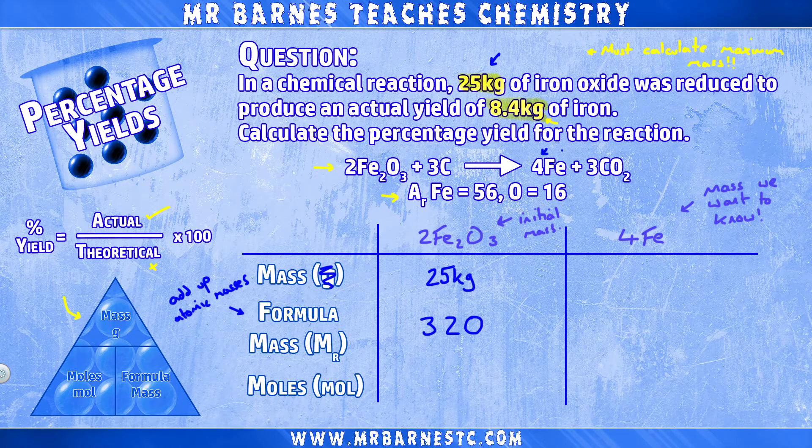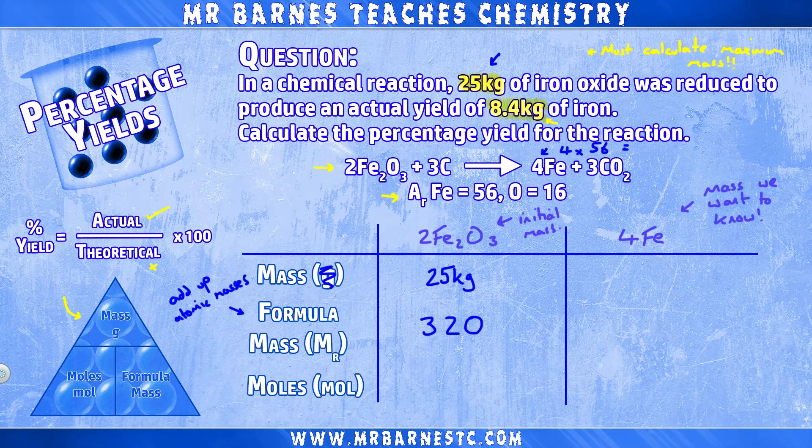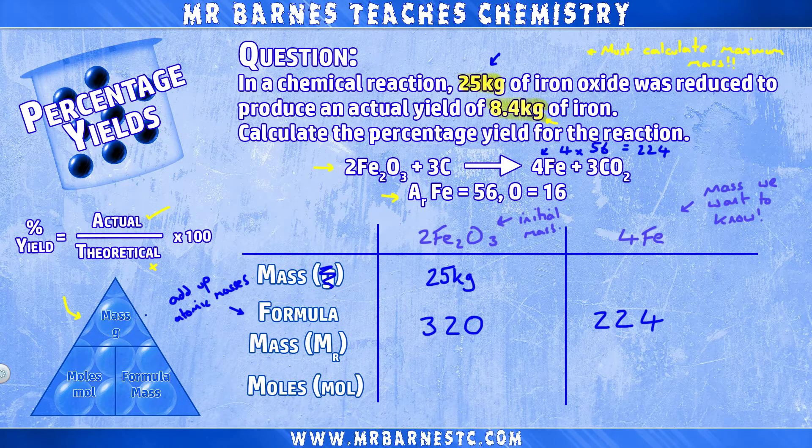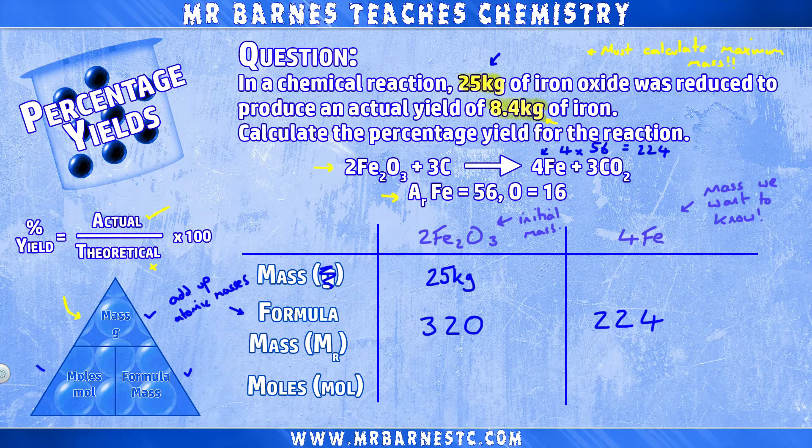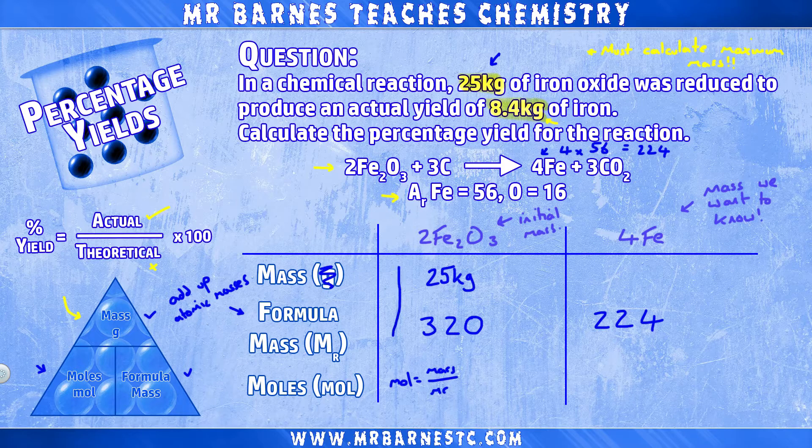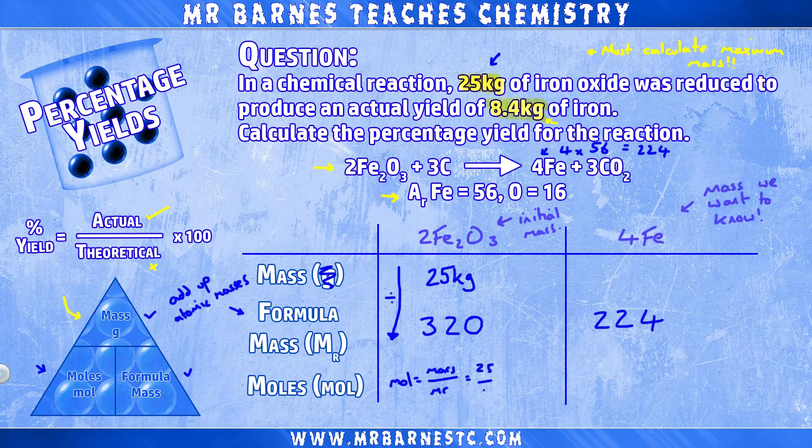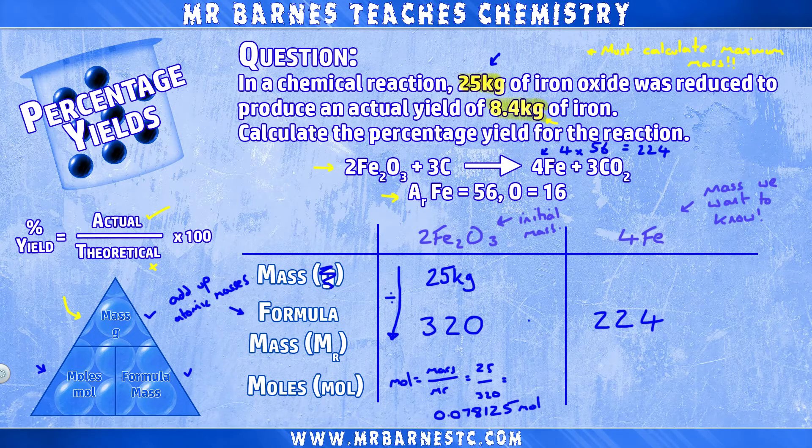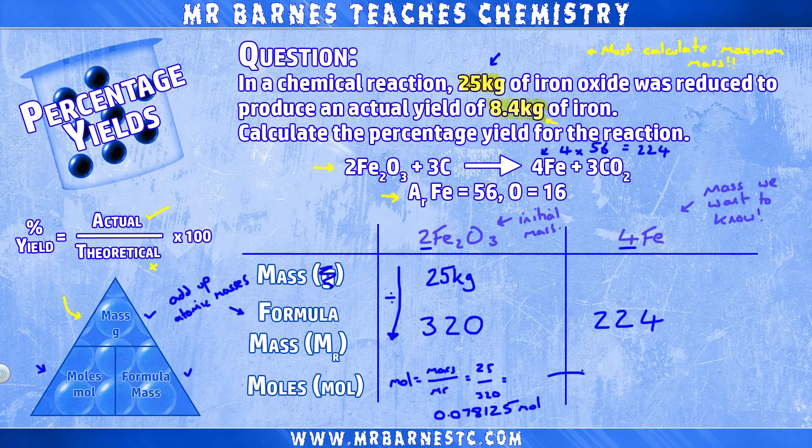We can also work out the formula mass for our 4 ions, which is 4 times 56, coming out at 224. Now that I've put the information in that we know, we can work out the moles, which as you can see from the triangle is mass divided by formula mass. So iron oxide is 25 divided by 320, giving me 0.078125 moles. And because we took the balancing into account earlier on, we already know the moles for iron. It's the same, which is 0.078125.